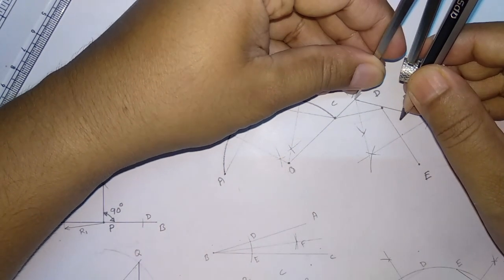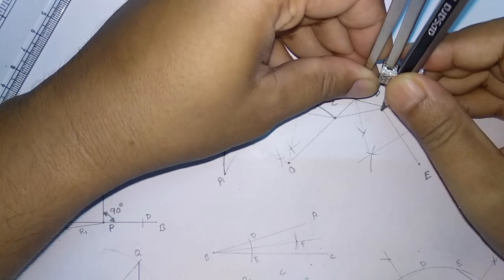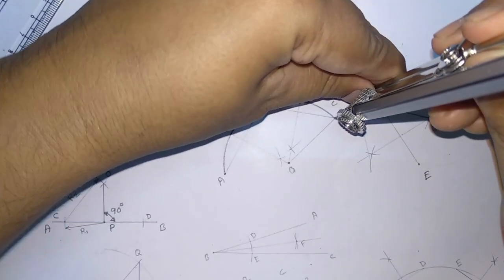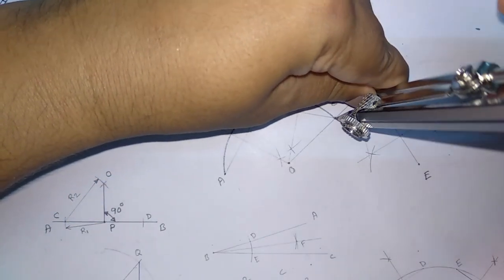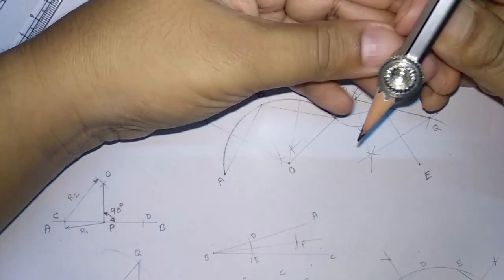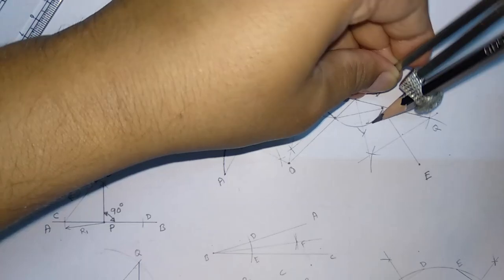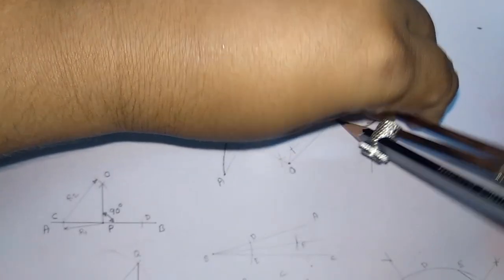HB pencil and taking this as a point. Now I have to draw the arc.